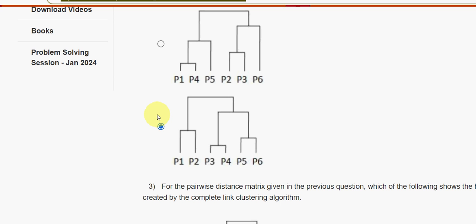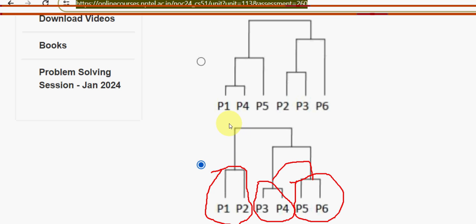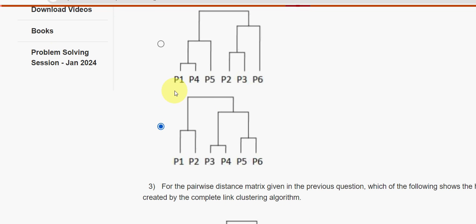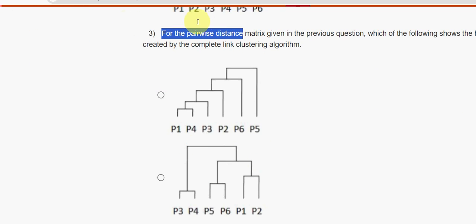Here p1 and p2 will get paired, as well as p3 and p4, and p5 and p6. Between these two pairs, whichever has the least distance from p1-p2 will get the pairwise linkage. So I am going with the fourth option. Next, third question: for the pairwise distance matrix given in the previous question, which of the following shows the hierarchy of clusters created by the complete link clustering algorithm?